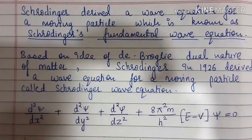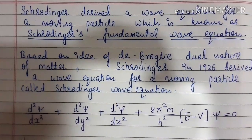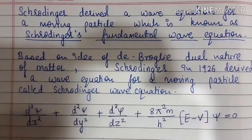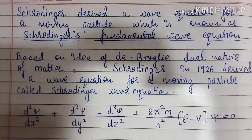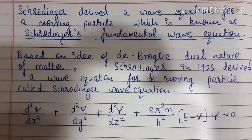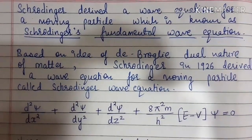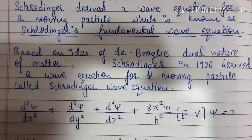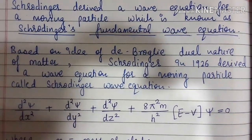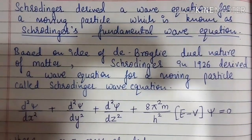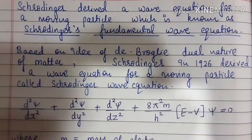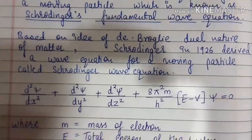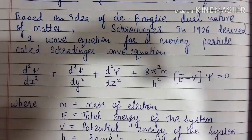Our topic is the derivation of the Schrödinger wave equation. Schrödinger derived a wave equation for a moving particle, known as the Schrödinger fundamental wave equation. Based on the idea of de Broglie's dual nature of matter, Schrödinger in 1926 derived this wave equation for a moving particle, and this is what we have to derive.